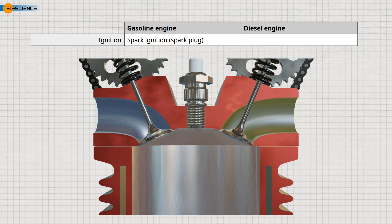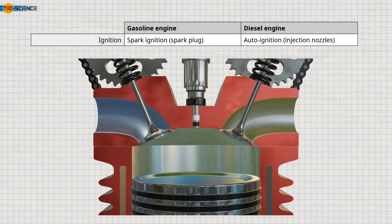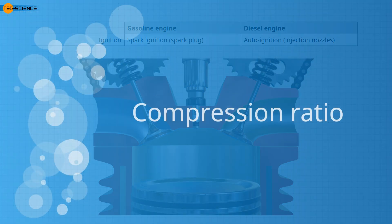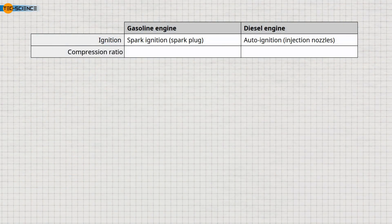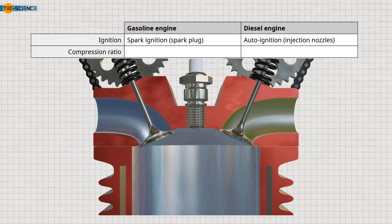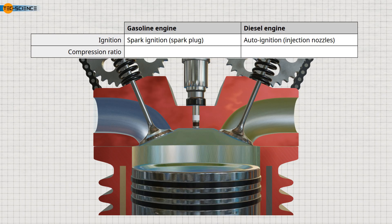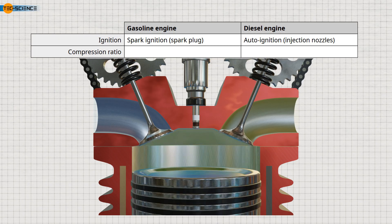In diesel engines, however, the diesel-air mixture ignites itself due to the high temperatures during compression, known as compression ignition. Since the compressed air-fuel mixture in gasoline engines is ignited by the spark plug, the temperature during compression must be below the self-ignition temperature of the mixture, or premature explosion will occur. In diesel engines, the temperature during compression must exceed the auto-ignition temperature of the diesel-air mixture.